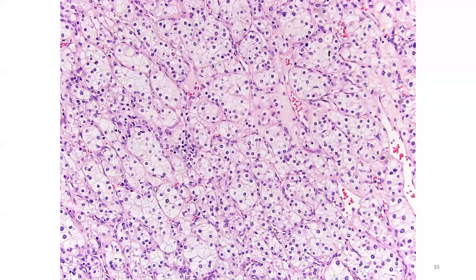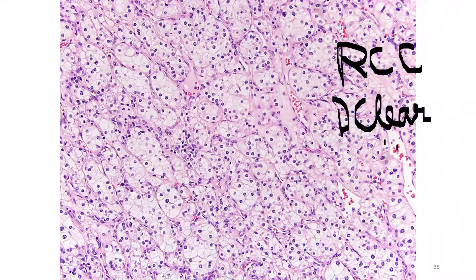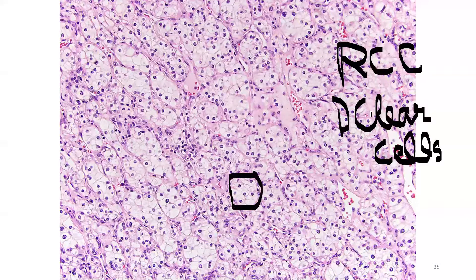This slide shows renal cell carcinoma. There are various types of RCC, and this type is the clear cell variant of renal cell carcinoma — the most common type.